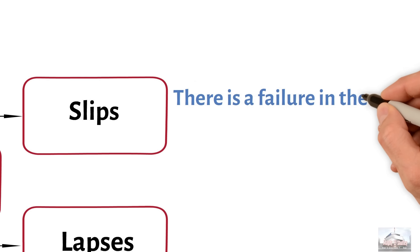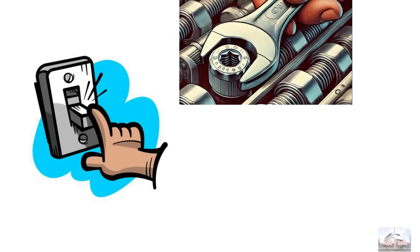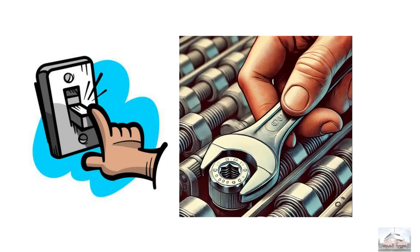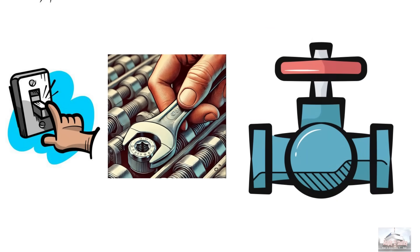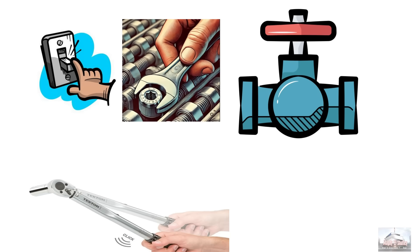Slips occur when there is a failure in the execution of an action as planned. For example, switching the wrong switch, performing an action in the wrong direction, clockwise instead of anticlockwise, turning a valve the wrong way, or over-torquing a bolt, typically happens due to inattention.